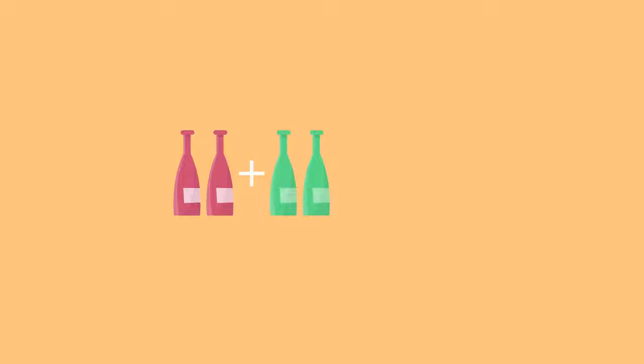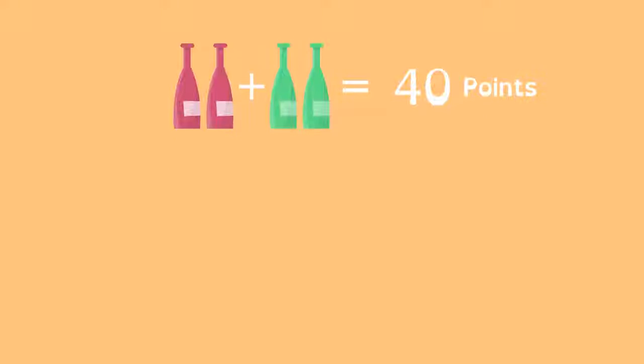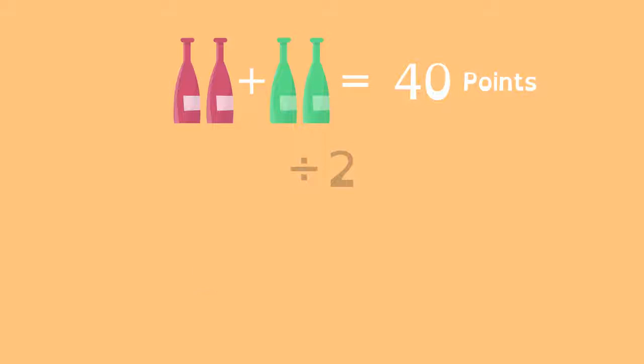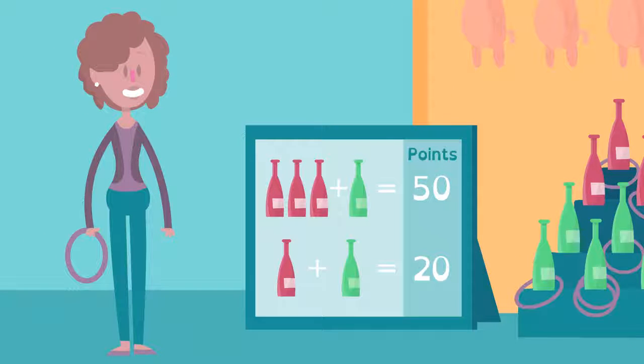If 2 red and 2 green are 40 points, then Kate can divide by 2 to find that 1 red and 1 green are 20 points. She's closer to knowing how many points each color is worth, but isn't there yet.